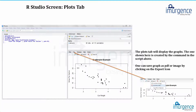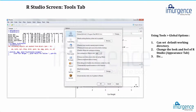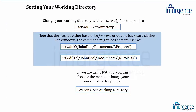The Plots tab shows graphs from whatever you run in your console — for example, you can see a scatter plot here. In the settings, accessible via Tools > Options, you can do general settings such as setting your default CRAN mirror. For example, in India it would be IIT Madras; there are also servers in Canada, the US, and other locations. You can set it to global option zero to use the cloud.